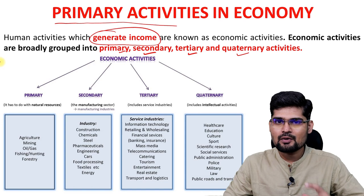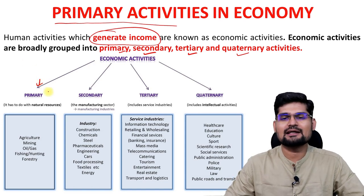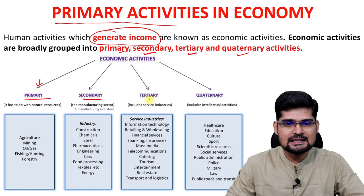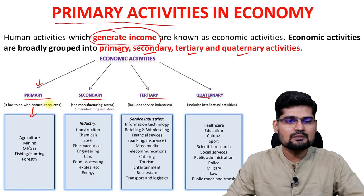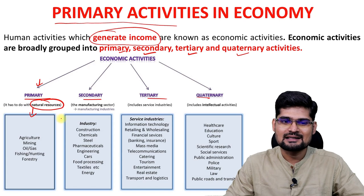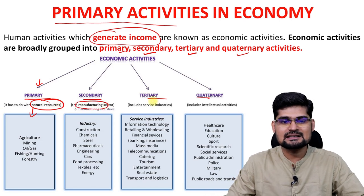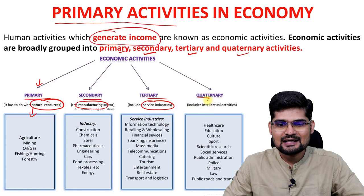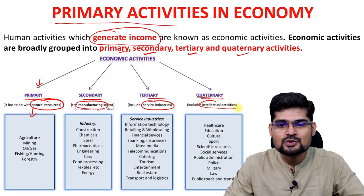It is important to learn about all of them in this flow diagram. Primary is basically natural resource based. Secondary is manufacturing based. Tertiary involves service industries and quaternary involves the intellectual activities.